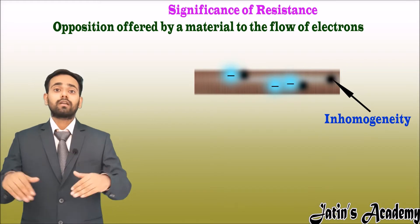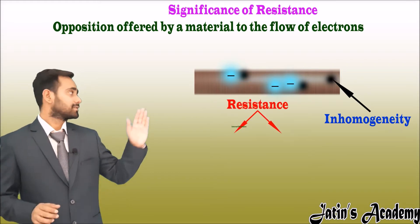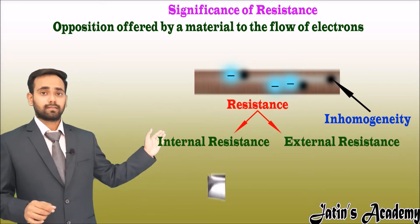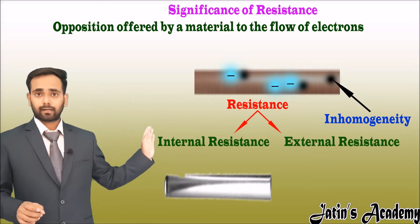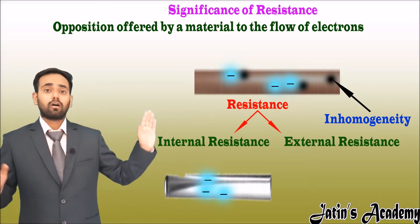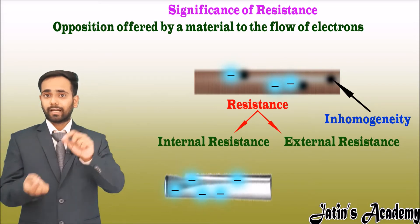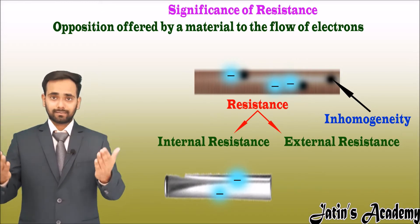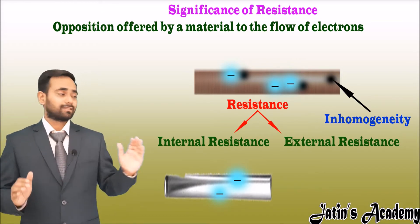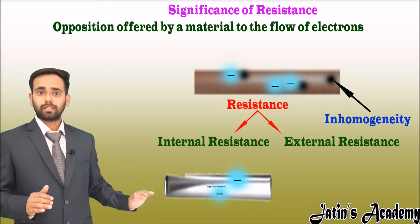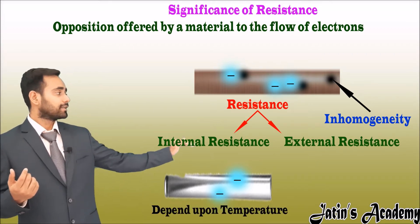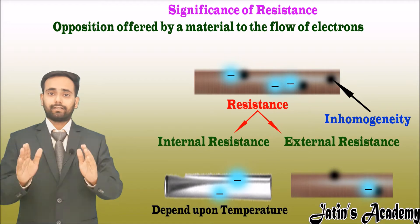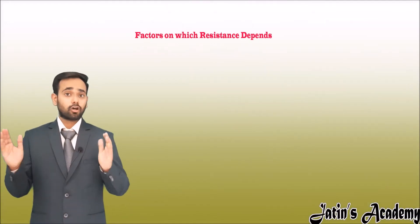Resistance is of two types: first is internal resistance and second is external resistance. Internal resistance occurs when so many electrons are moving in the same rod and these electrons are actually colliding with each other. These collisions stop the movement of the electrons and create a resistance to the flow of electrons. This is internal resistance, which depends upon the temperature and external conditions. External resistance is the resistance applied by the material itself.